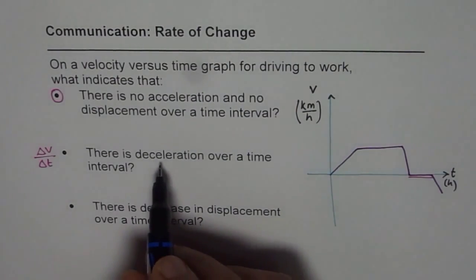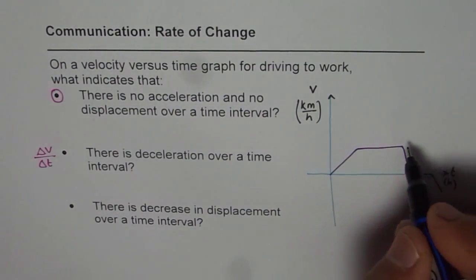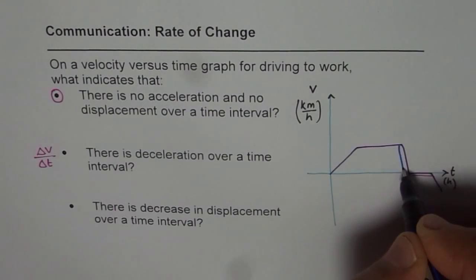Let me use another ink for this. So de-acceleration means negative. So negative is along this path. Velocity is decreasing, you see from here to here.